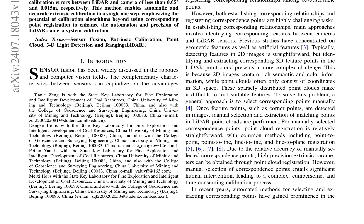The results show average rotation and translation calibration errors between LiDAR and camera of less than 0.05 degrees and 0.015 meters, respectively. This level of accuracy is achieved in a single step, highlighting the potential of calibration algorithms beyond using corresponding point registration to enhance the automation and precision of LiDAR camera system calibration. The proposed method enables automatic and accurate extrinsic calibration, eliminating the need for manual intervention and reducing the complexity of the calibration process, with significant implications for the widespread adoption of these systems in various applications.